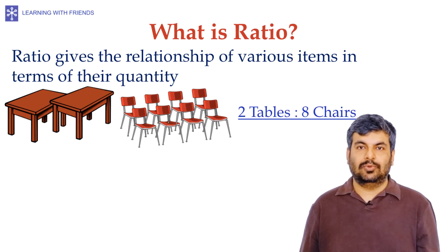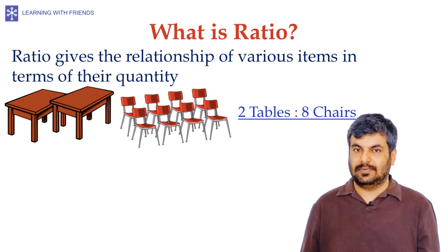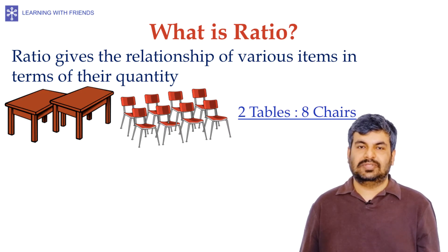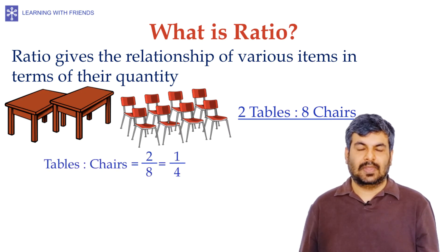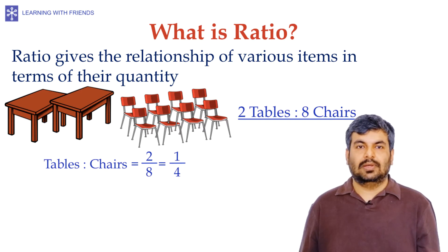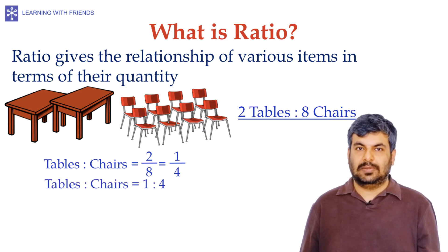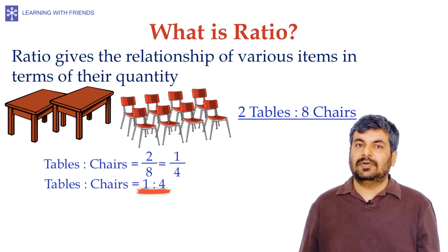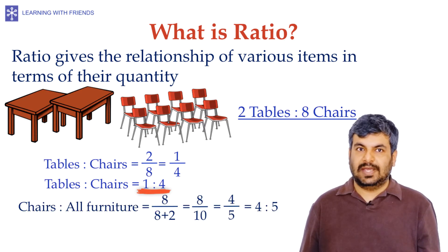The ratio of the number of tables to the number of chairs is 2:8. Ratios can be represented as fractions, so another way of expressing this ratio is 2 divided by 8, which equals 1/4. Thus the ratio of tables to chairs in simplest form is 1:4.